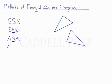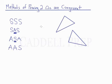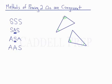The next method is angle, angle, side — AAS. Unlike ASA, the side does not have to be between the two angles. So we could use two angles along with a non-included side to prove the two triangles are congruent. For example, we could use these two angles and this side, or these two angles and this larger side — as long as the side is not between the two angles.